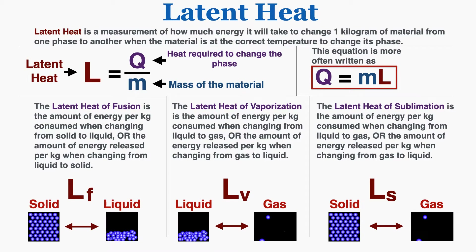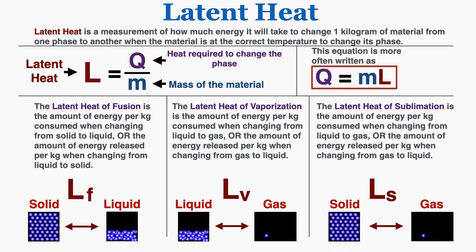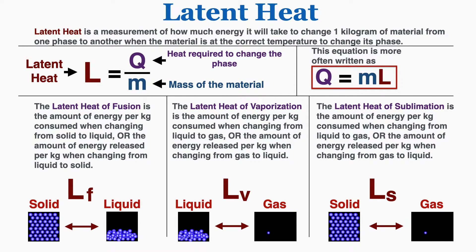This lecture is about latent heat. Latent heat is a measurement of how much energy it will take to change one kilogram of material from one phase to another when the material is at the correct temperature to change its phase. Latent heat is equal to the heat required to change the phase divided by the mass of the material you're trying to change.